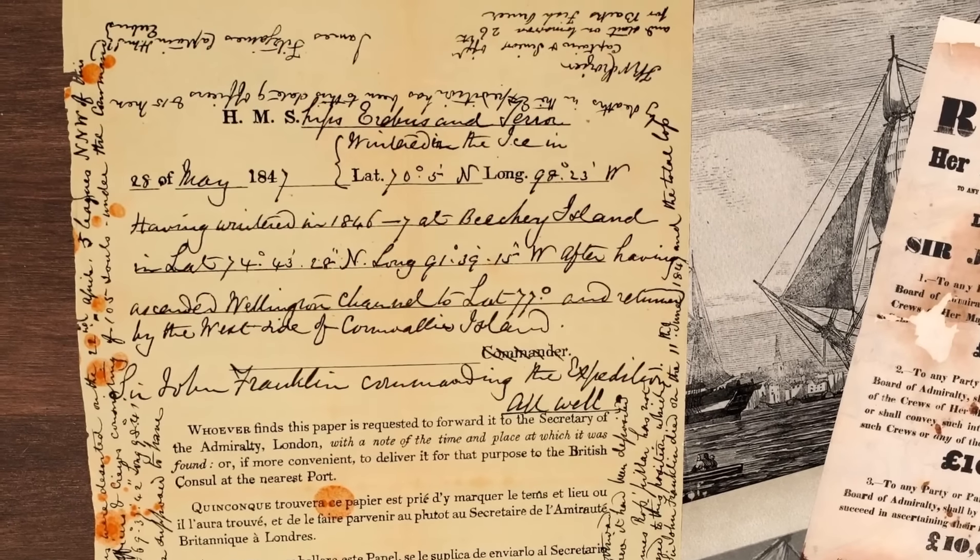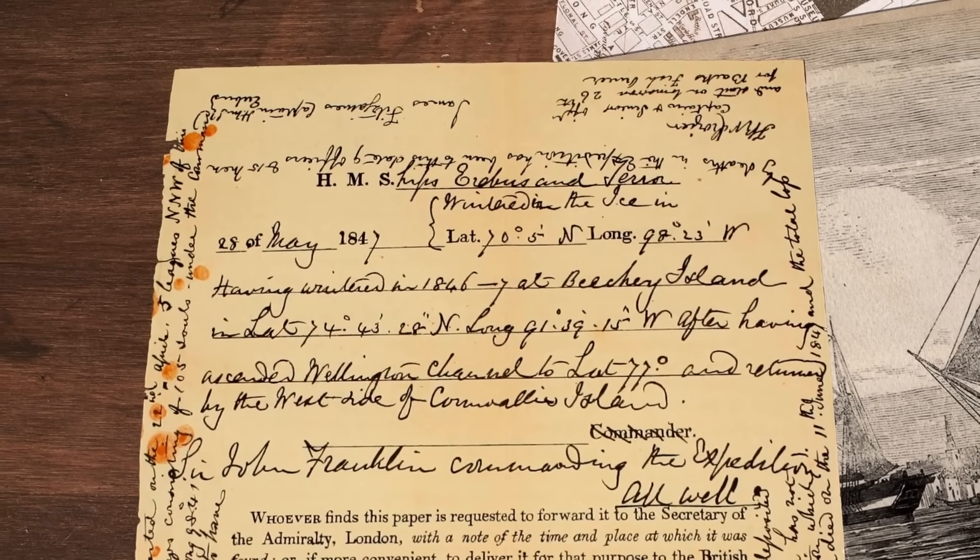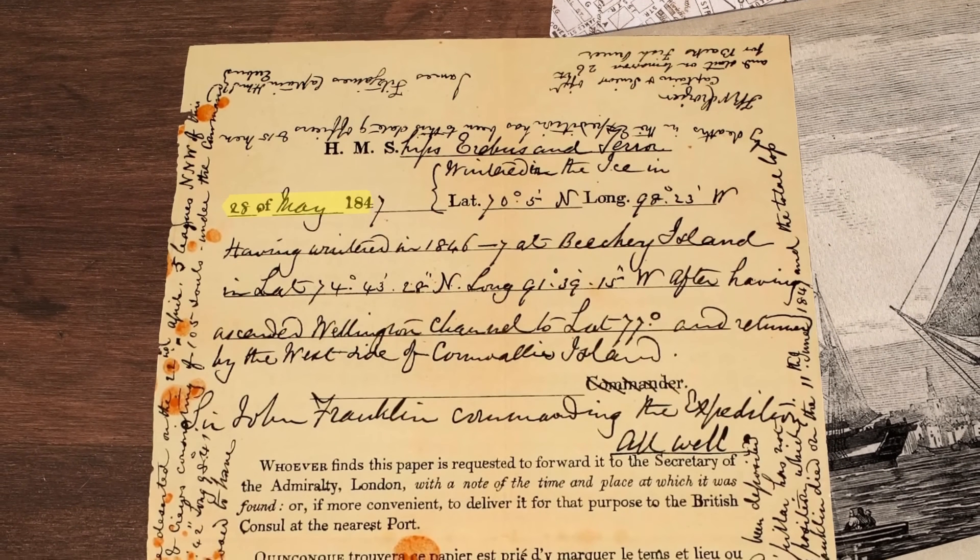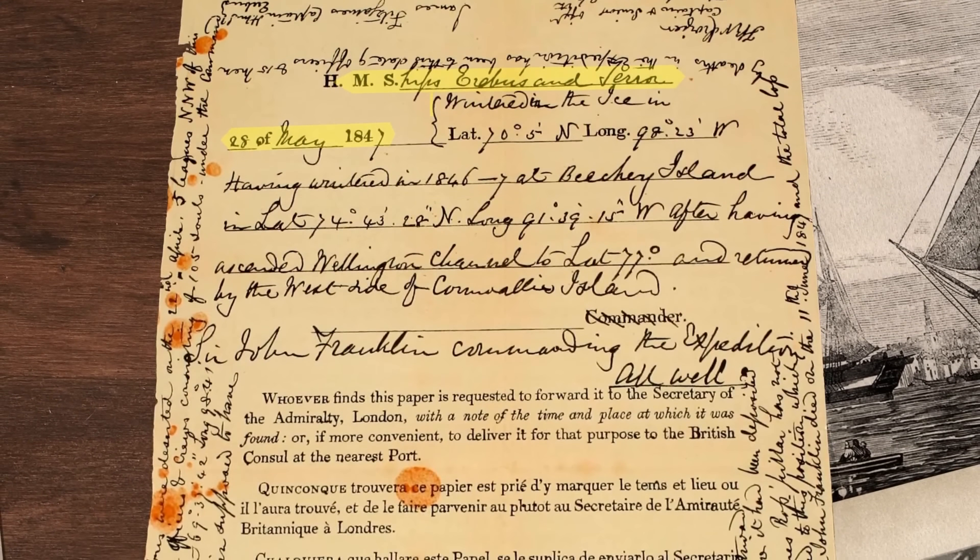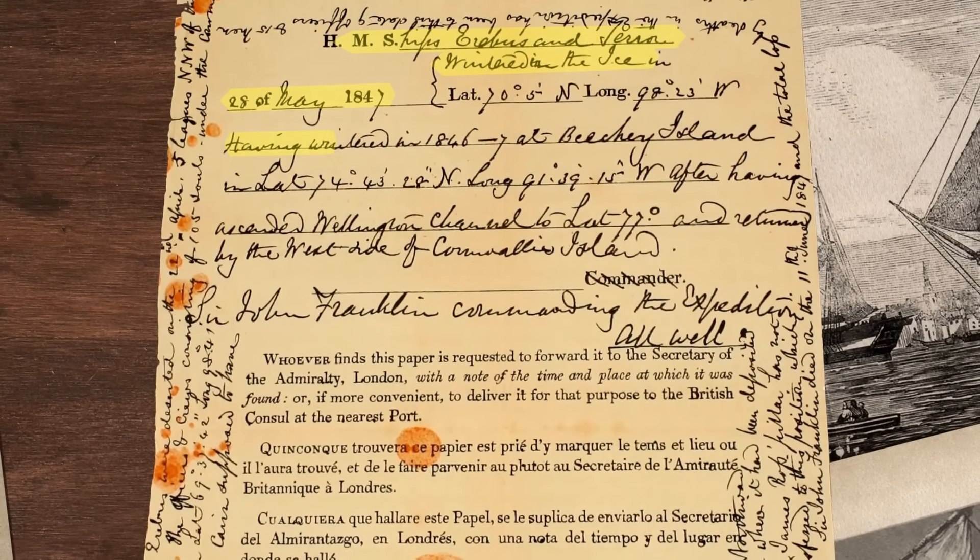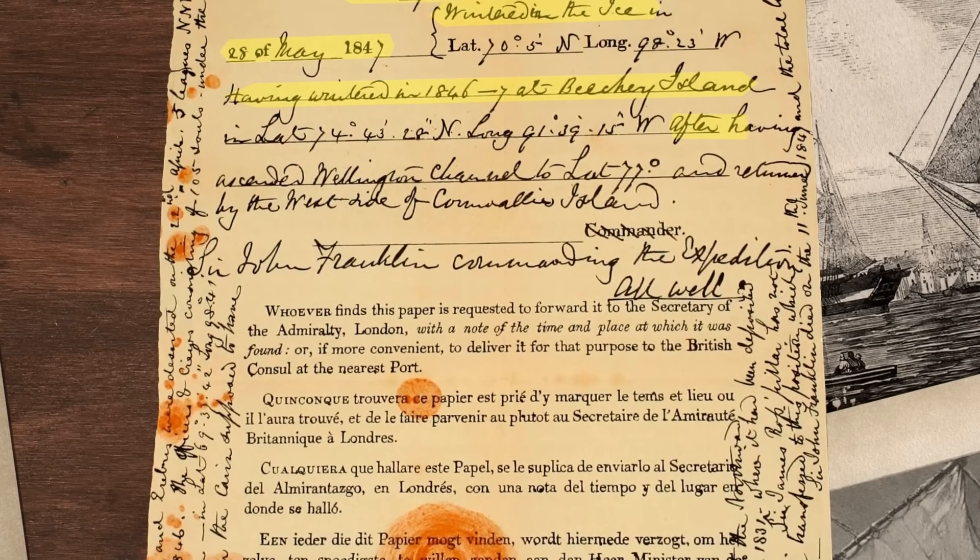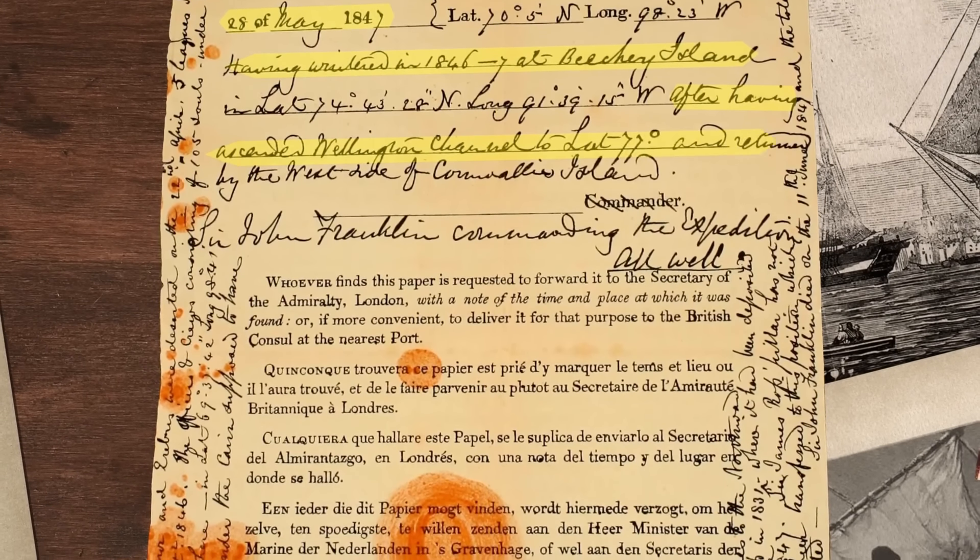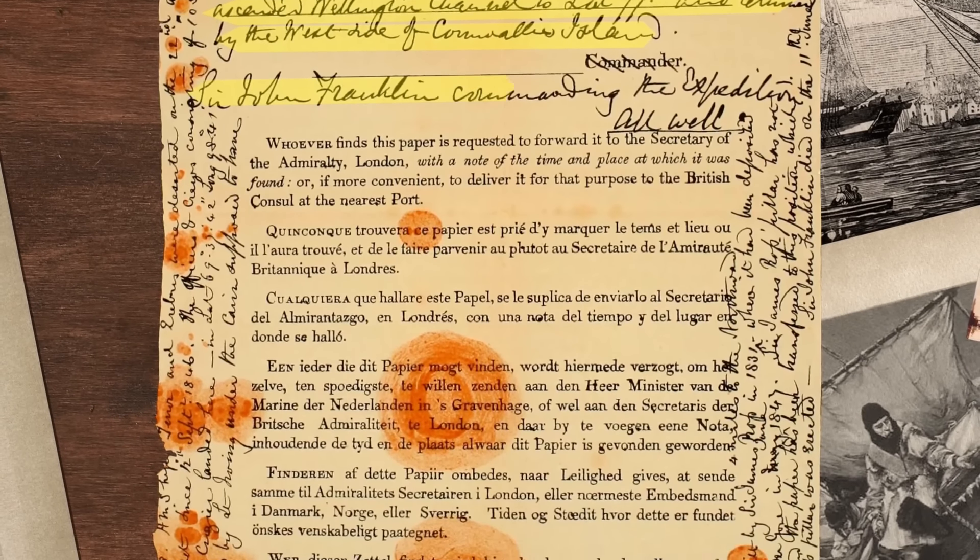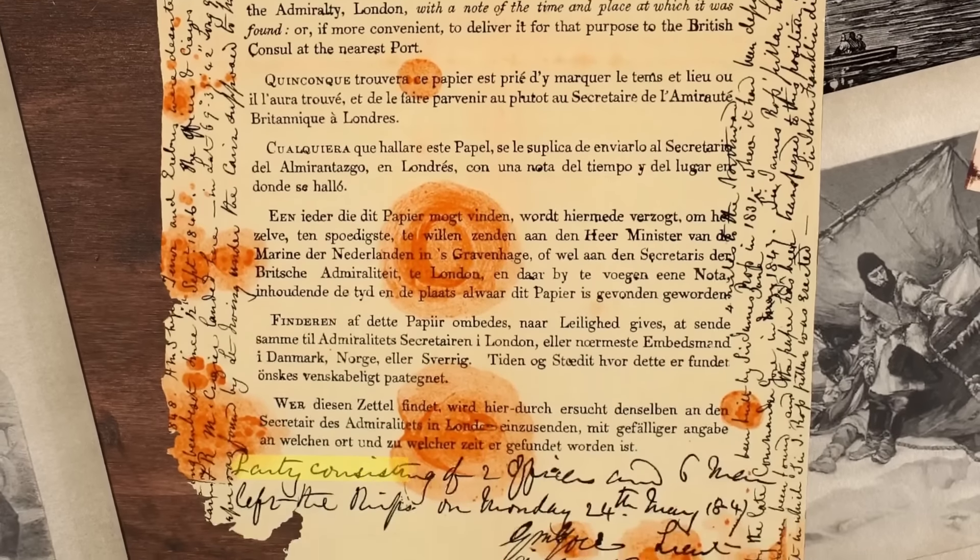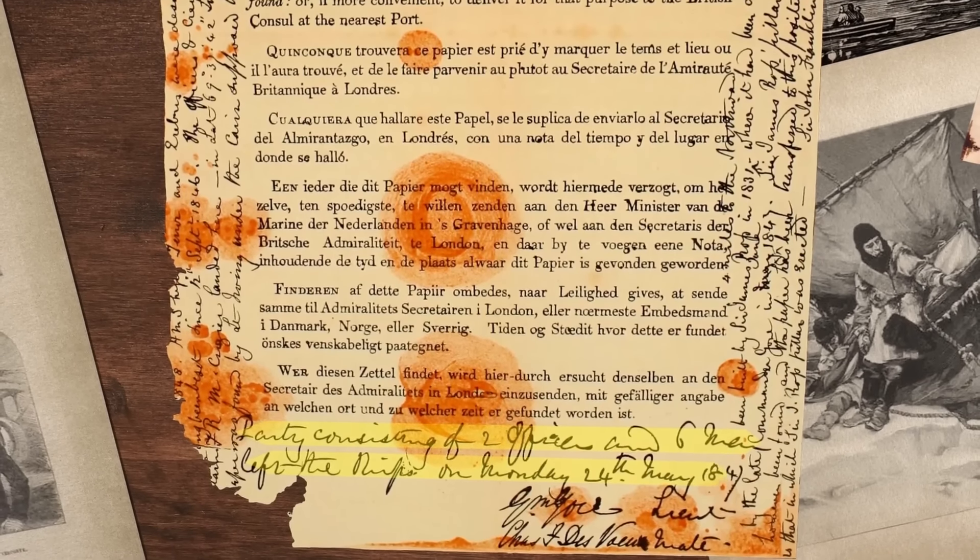The first message had been written on a special pre-printed admiralty form in May 1847, and that's what it claimed. 28 May 1847, HM ships Erebus and Terror, wintered in the ice. Having wintered in 1846-7 at Beechey Island, after having ascended Wellington Channel to lat 77 degrees and returned by the west side of Cornwallis Island, Sir John Franklin commanding the expedition. All well, party consisting of two officers and six men left the ships on Monday the 24th of May 1847.